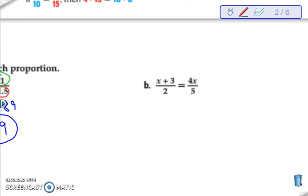Over here we are looking at the same thing. So again you are going to want to circle all the pieces that you are multiplying together. So x plus 3 gets multiplied by 5, and 4x gets multiplied by 2.